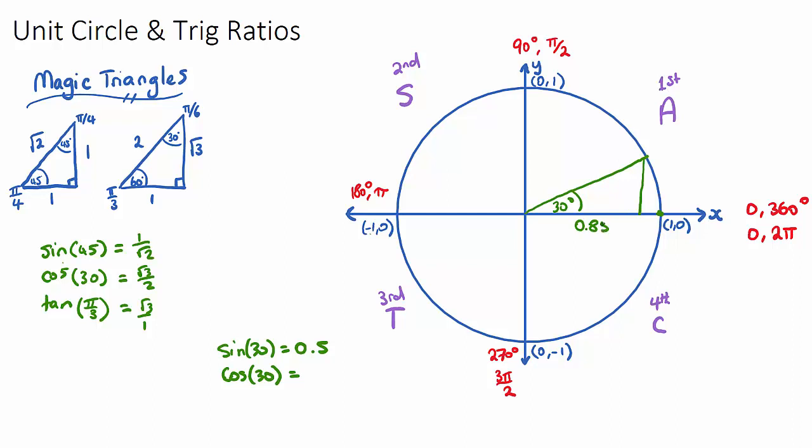The x component of this diagonal line will be 0.85 or 85 percent of the total length. Hopefully what you're seeing here is that sine is the height component and cos is the width component of any diagonal line.